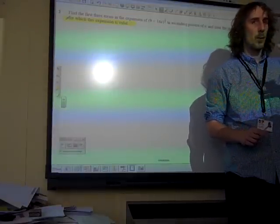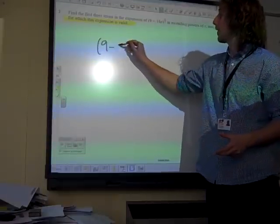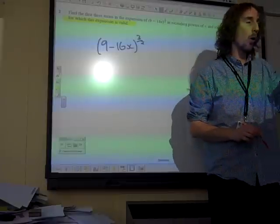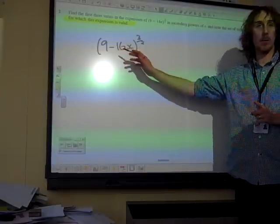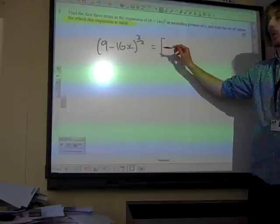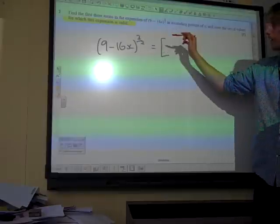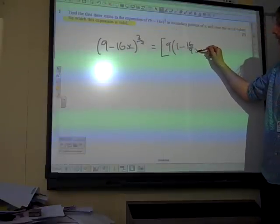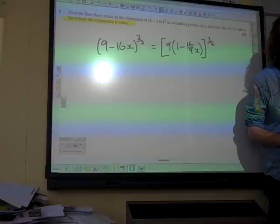In core four, we know that if we're doing a binomial expansion, the first thing you need to do is to get it so you have a 1 at the start of the bracket. So we need to take the 9 out as a factor of the bracket. Now, what we're doing here is staying inside the power of 3 over 2. So it's going to be 9 lots of 1 minus 16 ninths of x, all to the power of 3 over 2.